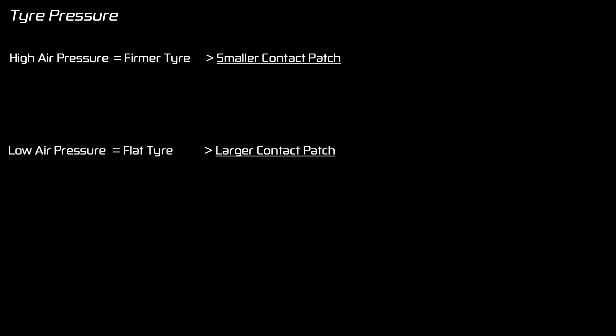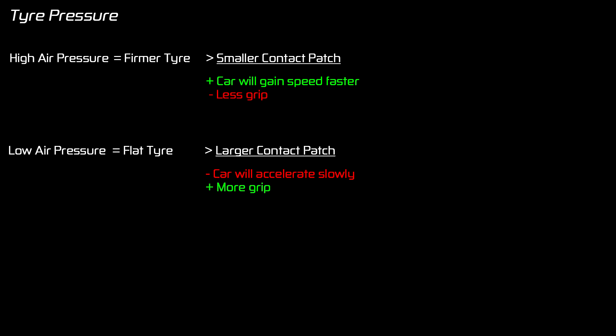Being able to control the size of the contact patch gives you a couple of options. A firmer tire with a small contact patch means there's less friction between the tire and the road, so the car will get up to a higher speed quicker. The downside is that the tire will have less grip. A car with low tire pressure will have the opposite effect — it will have better grip because of the larger contact patch, however there's more friction so the car will be slow and sluggish, especially when gaining speed.